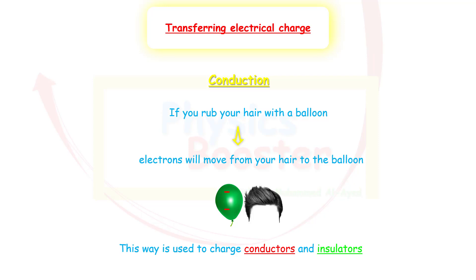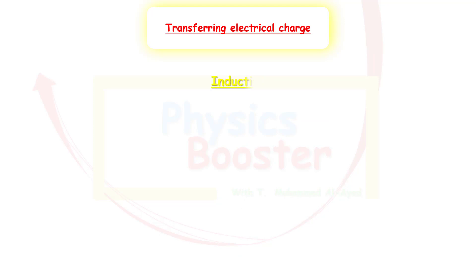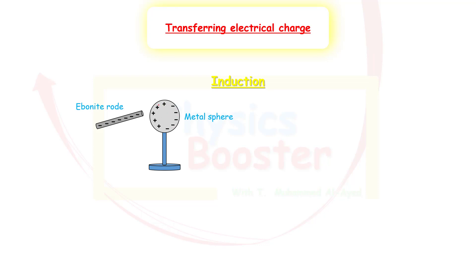Can we charge objects without them touching each other? Yes — the second method is called induction. We have a rod which is negatively charged. When we bring this rod closer to a metal sphere, the sphere has both positive and negative charges. It's important to keep in mind that if the sphere is on an insulated stand, electrons cannot move through it and leave toward the ground — nothing is allowed to leave the sphere because it's insulated.